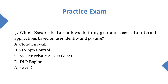Question 5: Which Scalar feature allows defining granular access to internal applications based on user identity and posture? A. Cloud Firewall. B. ZIA App Control. Answer: C. Scalar Private Access.